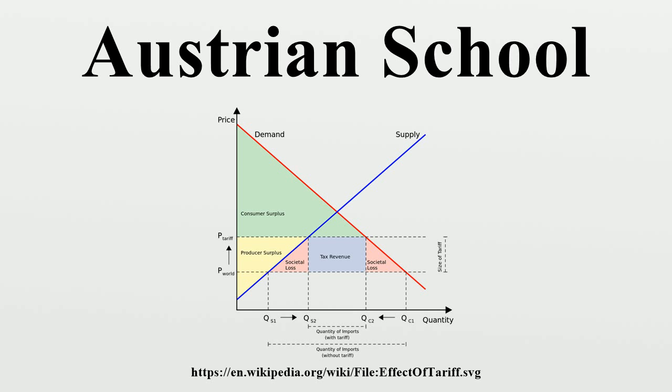Austrians seek to understand the economy by examining the social ramifications of individual choice, an approach called methodological individualism. It differs from other schools of economic thought, which have focused on aggregate variables, equilibrium analysis, and societal groups rather than individuals.